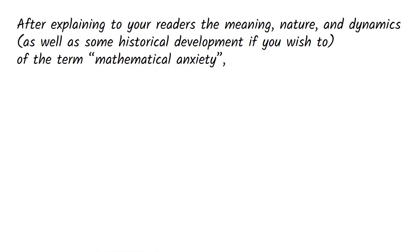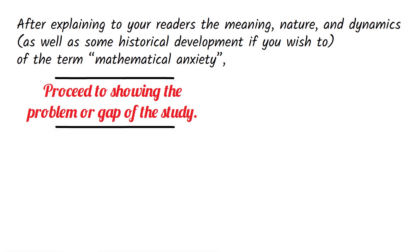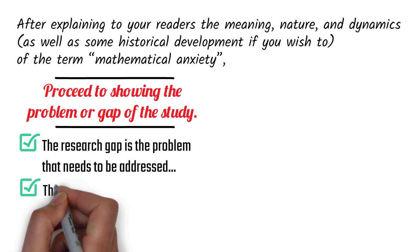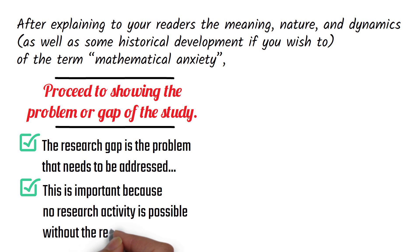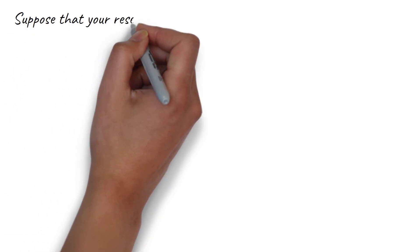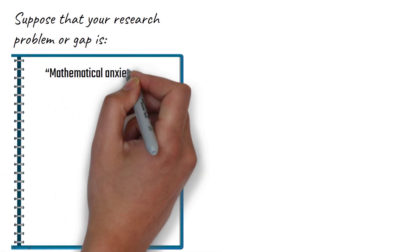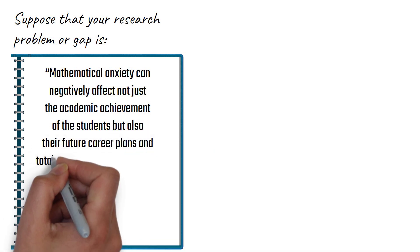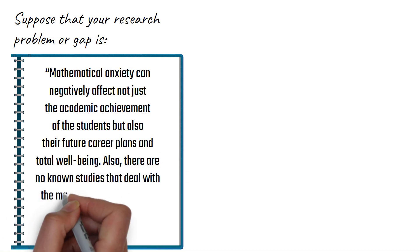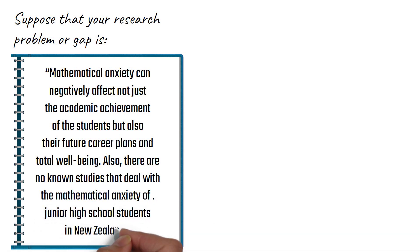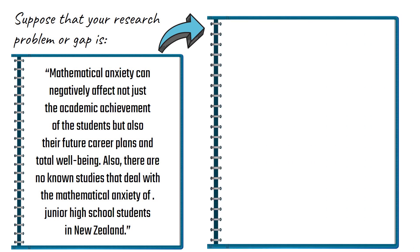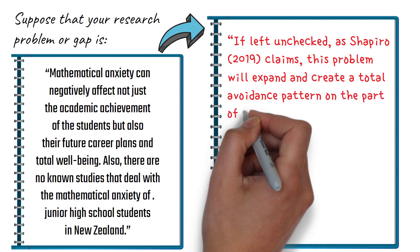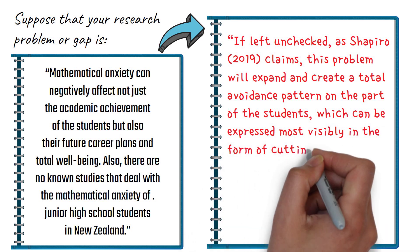As you may already know, the research gap is the problem that needs to be addressed in the study. This is important because no research activity is possible without the research gap. Let us suppose that your research problem or gap is that mathematical anxiety can negatively affect not just the academic achievement of students, but also their future career plans and total well-being. Also, there are no known studies that deal with the mathematical anxiety of junior high school students in New Zealand. With this, you may say: 'If left unchecked, as Shapiro claims, this problem will expand and create a total avoidance pattern on the part of the students, which can be expressed most visibly in the form of cutting classes and habitual absenteeism.'